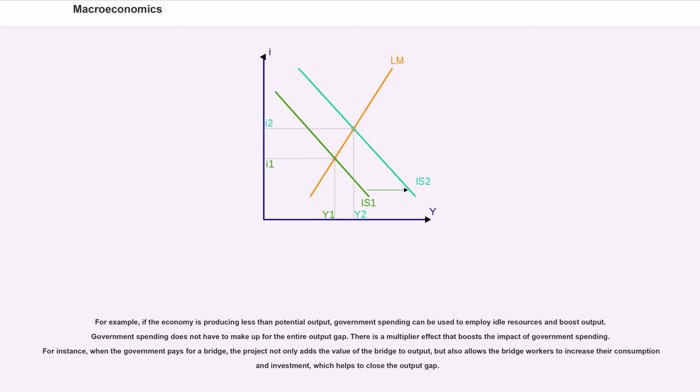Government spending does not have to make up for the entire output gap. There is a multiplier effect that boosts the impact of government spending. For instance, when the government pays for a bridge, the project not only adds the value of the bridge to output, but also allows the bridge workers to increase their consumption and investment, which helps to close the output gap.